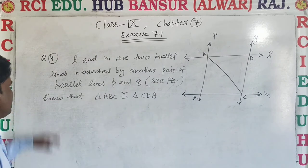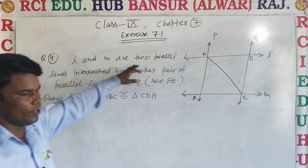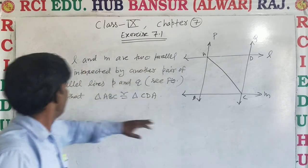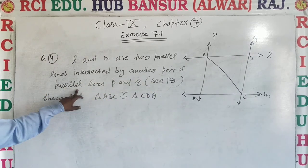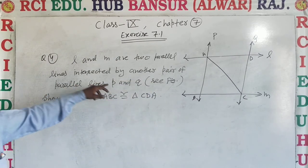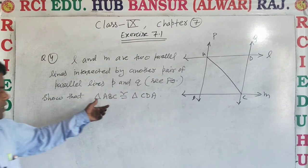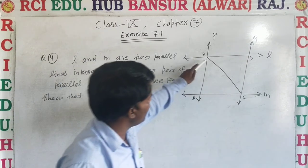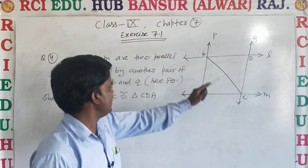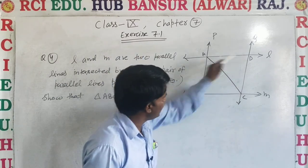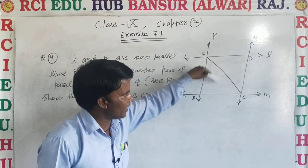Next, from Exercise 7.1, Question Number 4: L and M are two parallel lines intersected by another pair of parallel lines P and Q. Show that triangle ABC and triangle CDA are congruent.